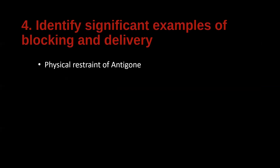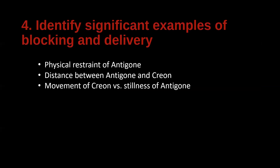When we take a look at that clip, we can see a few things in terms of the blocking. There's the physical restraint of Antigone exercised by the guard early in the scene, but she's pretty quickly released. Then as she and Creon are arguing, there's a physical distance between them that's maintained — as if they won't come any closer to each other. There's also a really interesting dynamic where Creon moves more; his motions are more pronounced, but Antigone is a more still character on stage.